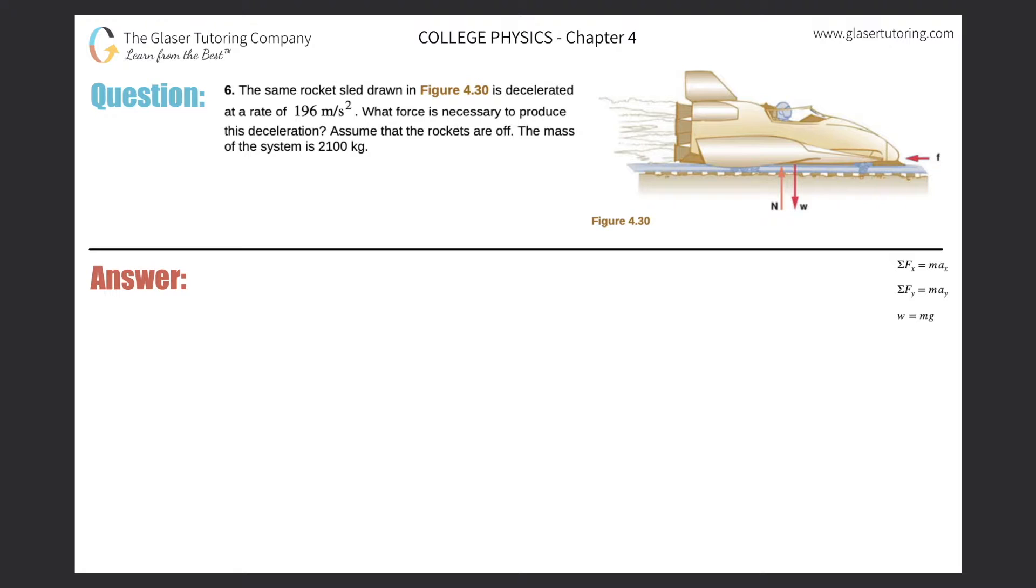Number six. The same rocket sled drawn in figure 4.30 is decelerated at a rate of 196 meters per second squared. What force is necessary to produce this deceleration? Assume the rockets are off and the mass of the system is 2,100 kilograms.